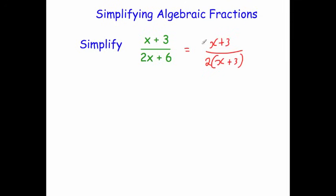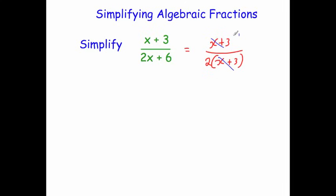Notice we've got x plus 3 on the numerator and x plus 3 on the denominator. If we divide both the top line and the bottom line by x plus 3, the top line gives 1 and the bottom line cancels, leaving us with 1 over 2. So when you cancel down x plus 3 over 2x plus 6, the answer is a half.